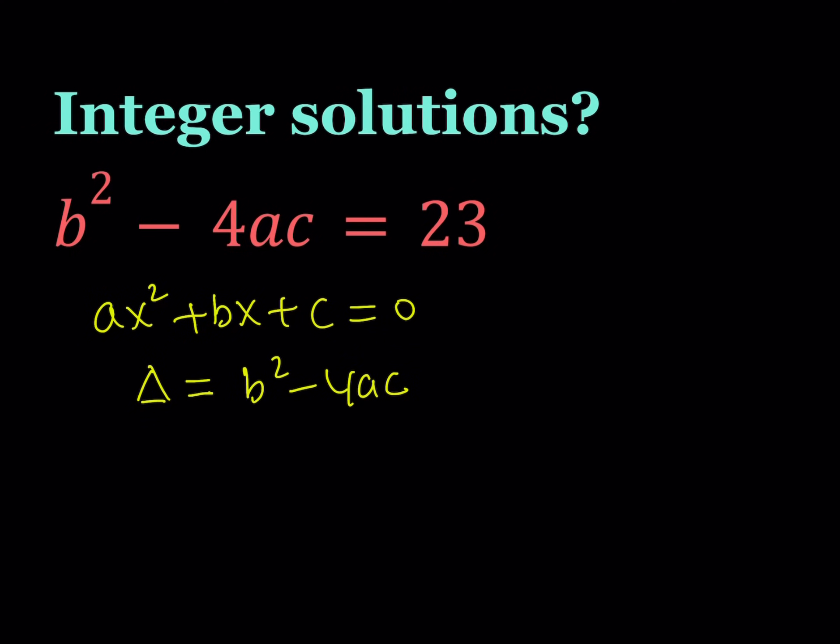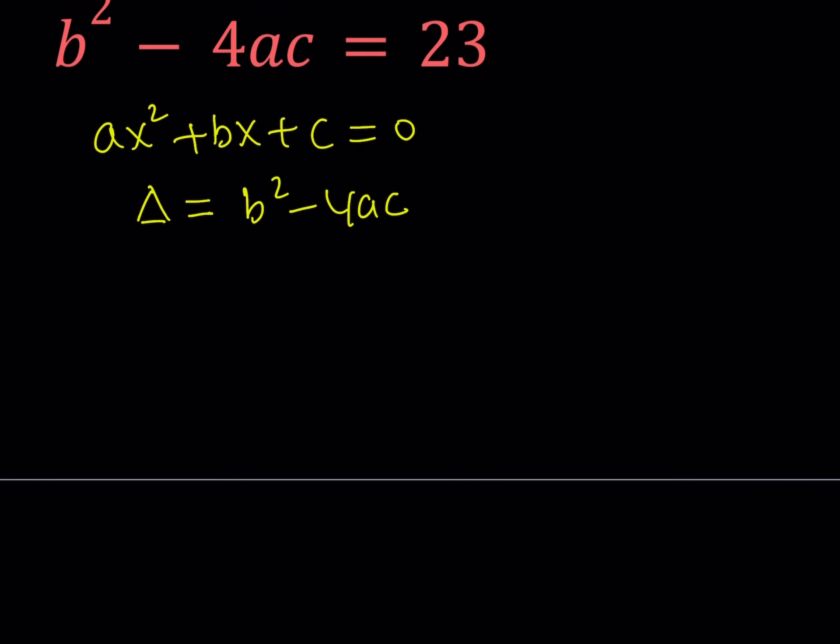So our question here is, is there a quadratic equation with integer coefficients whose discriminant is 23? We're going to try to answer that question and then at the end we're going to know if such quadratic equations exist. Let's go ahead and rewrite this equation: b squared minus 4ac equals 23.